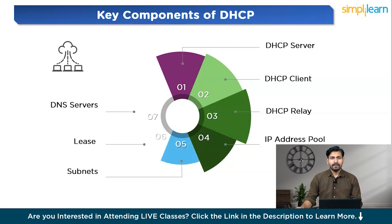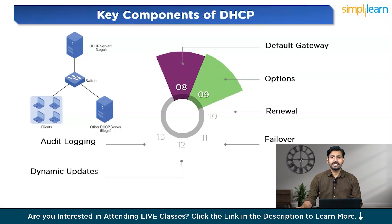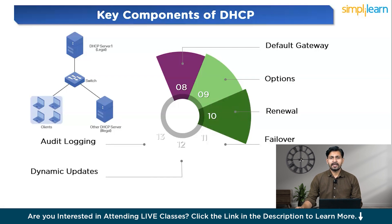Subnets are smaller segments of a larger network that help organize and manage network traffic efficiently. The lease is the period during which a device can use an assigned IP address — once the lease expires, the device must request a new one. The DHCP server can also provide addresses of DNS servers, which translate domain names into IP addresses, helping devices find websites. The default gateway is a device that routes traffic from a local network to other networks such as the internet, also provided by the DHCP server. Additional configuration details like subnet mask or time server information are provided as options.